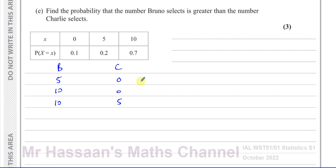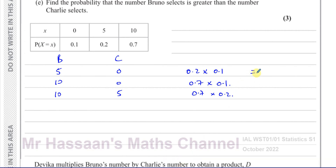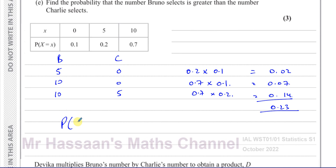The probability of Bruno picking 5 and Charlie picking 0 is 0.2 times 0.1. The probability of Bruno picking 10 and Charlie picking 0 is 0.7 times 0.1. The probability of Bruno picking 10 and Charlie picking 5 is 0.7 times 0.2. Adding these together: 0.02 plus 0.07 plus 0.14 equals 0.23. So the probability that Bruno's number is greater than Charlie's number equals 0.23.